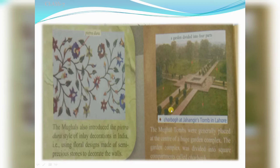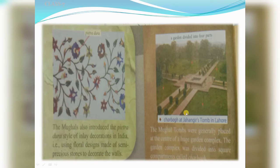Next, let's discuss the gardens. The gardens of the Mughals were basically divided into four halves. The Mughal tombs were generally placed at the center of a huge garden complex. The garden complex was divided into square compartments — chaar baan jine kaha jata tha — center mein fort ya unka mahal, aur uske exterior mein pura garden, which was basically divided into four halves, jisse char bagh kaha jata tha.